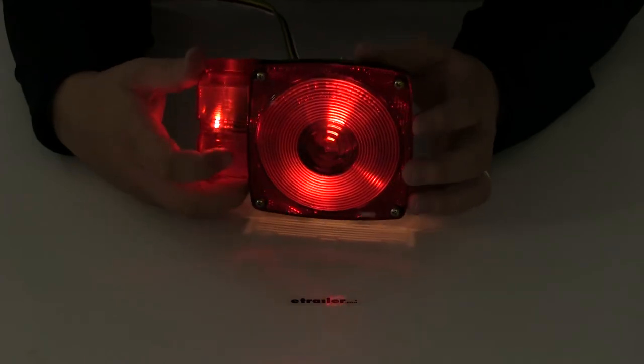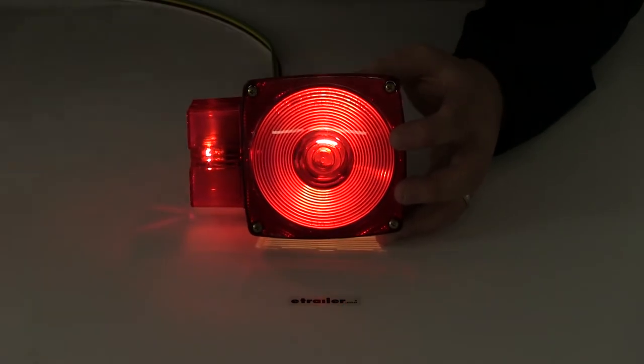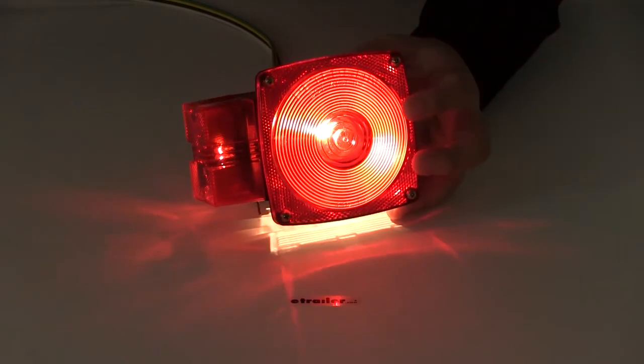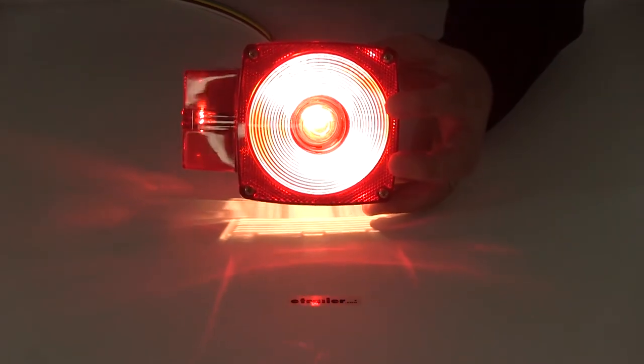You can see there again nice strong consistent signal. When I apply the brakes it illuminates even brighter and you got the license plate illuminator there on the base you can see that shining through down here.